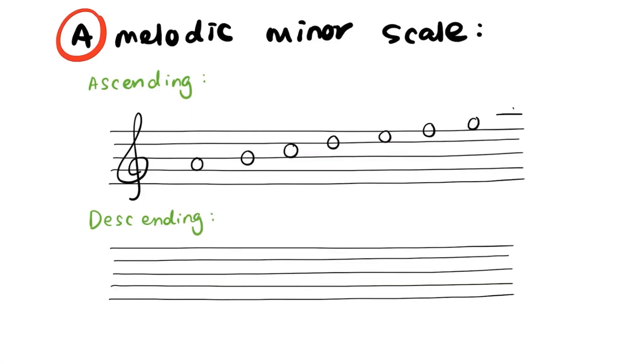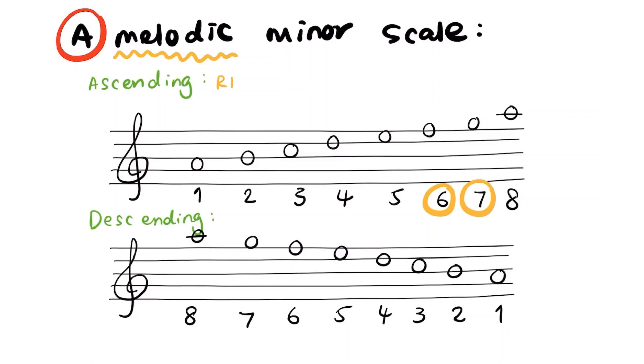Melodic minor is slightly different than harmonic minor. For melodic minor, we raise the 6th and 7th notes a semitone higher when playing upwards. The 6th note is F, which we raise to F sharp, and the 7th note is G, which we raise to G sharp.